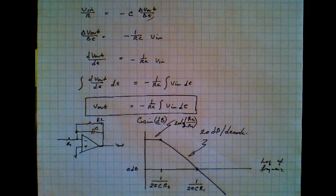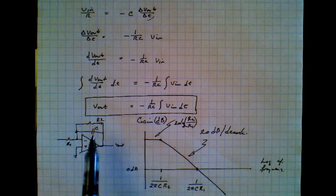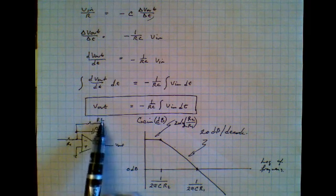So what this plot tells us is that in order to make a practical integrator, we have to have some way of discharging the capacitor. So we put in a large resistor here.